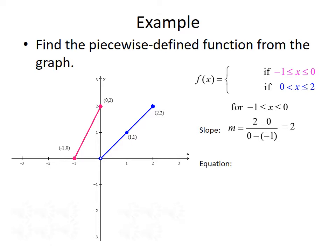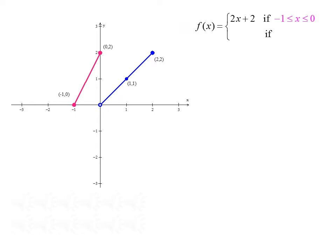For the red line, we're given two points: negative 1, 0 and 0, 2. Using the slope formula, slope equals 2 minus 0 over 0 minus negative 1, giving a slope of 2. Using point-slope form with the point negative 1, 0: y minus 0 equals 2 times x minus negative 1, which simplifies to y equals 2x plus 2. So the first part of our piecewise function is f of x equals 2x plus 2 if negative 1 is less than or equal to x is less than or equal to 0.